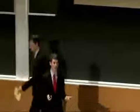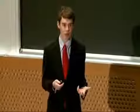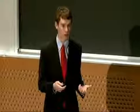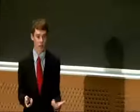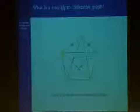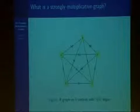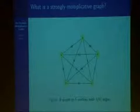Before I delve into my project, it's important to define exactly what is a strongly multiplicative graph. Here is an example of a strongly multiplicative graph on five vertices. To construct a strongly multiplicative graph, it has the property that if it has n vertices, you label these n vertices with the integers from 1 through n, and then any time you construct an edge between two vertices, you label that edge with the product of the two vertices that you are connecting.